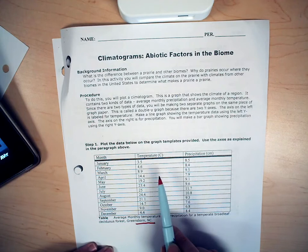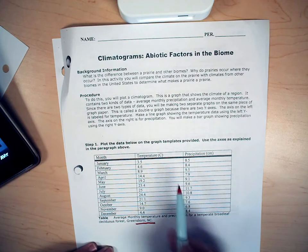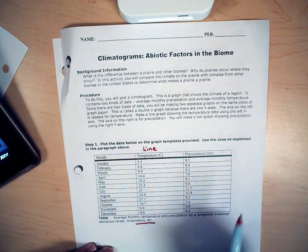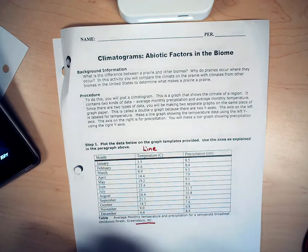I'm going to plot two types of graph. The first one for temperature is going to be a line graph and for precipitation we're going to do a bar graph.